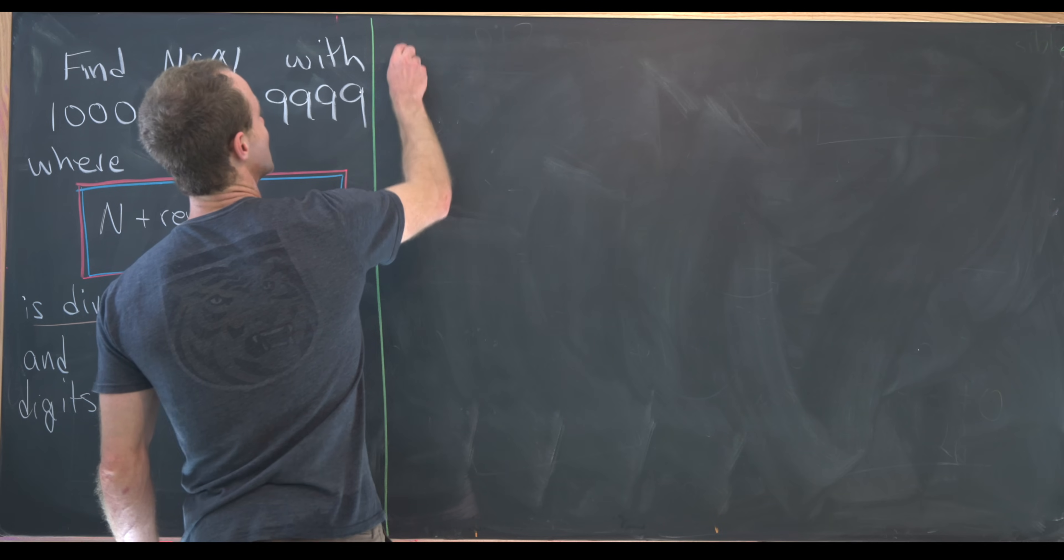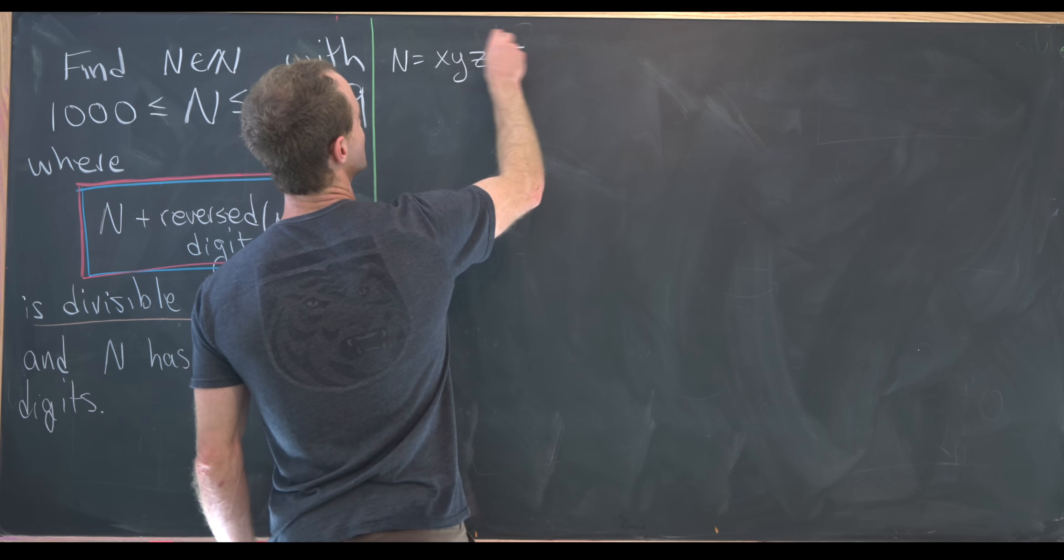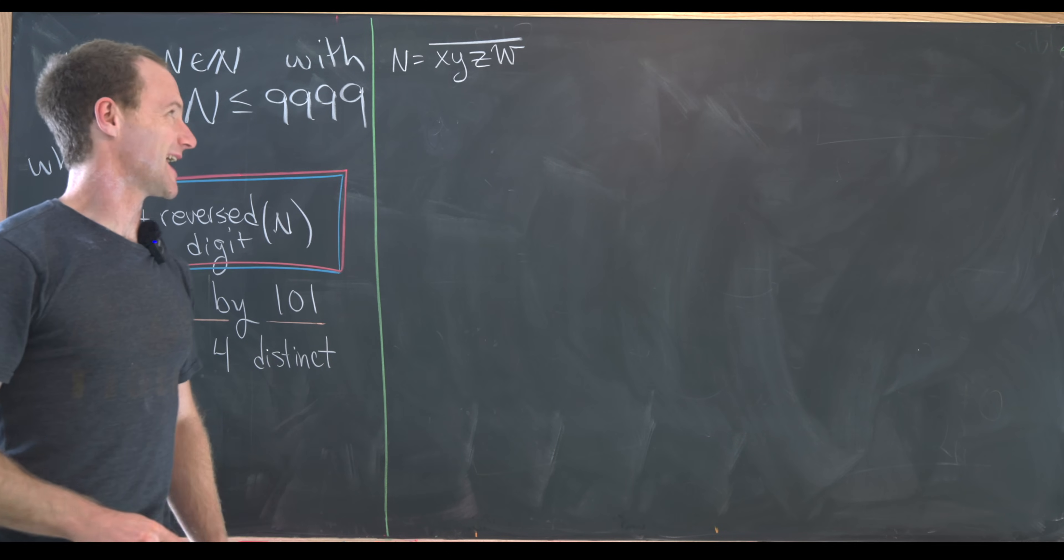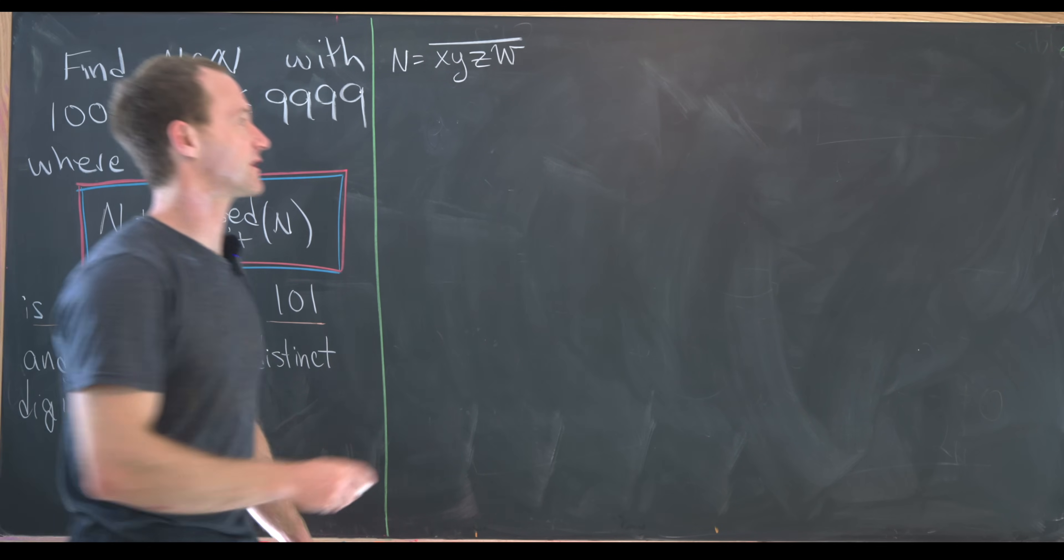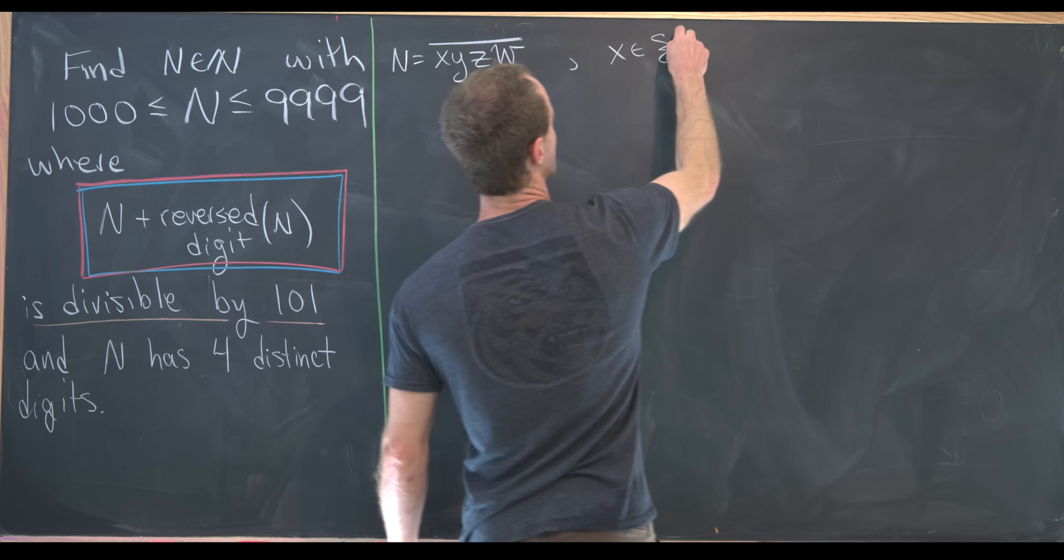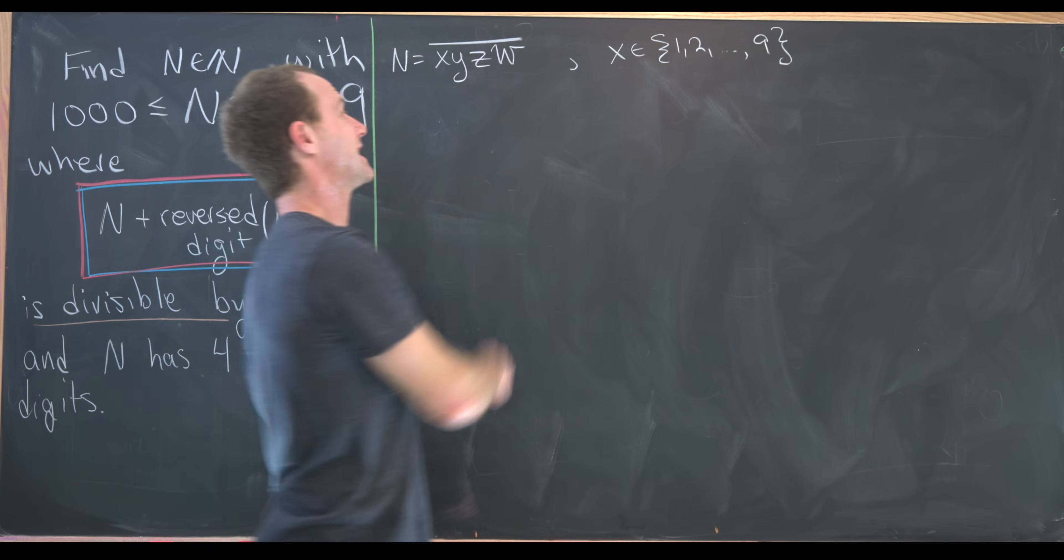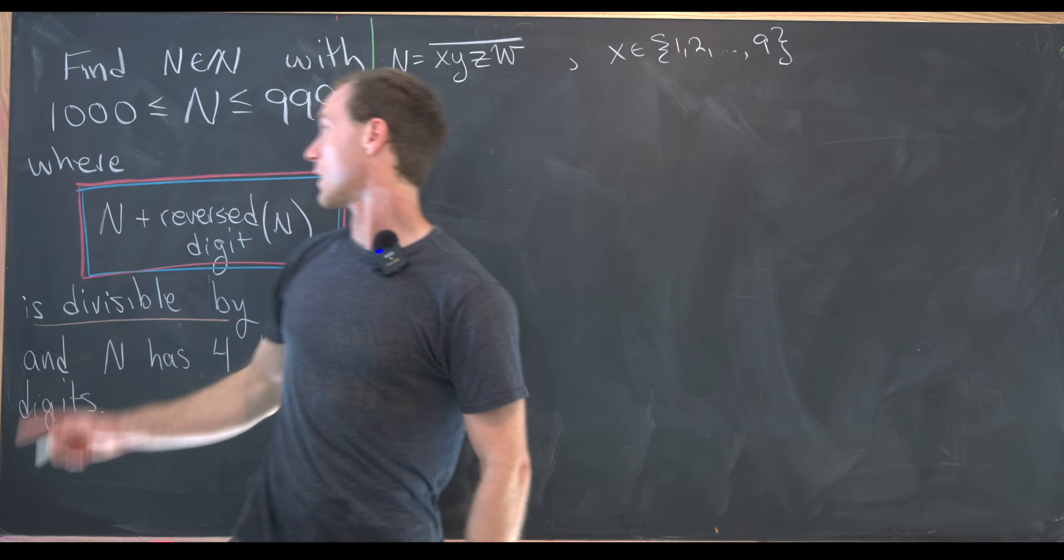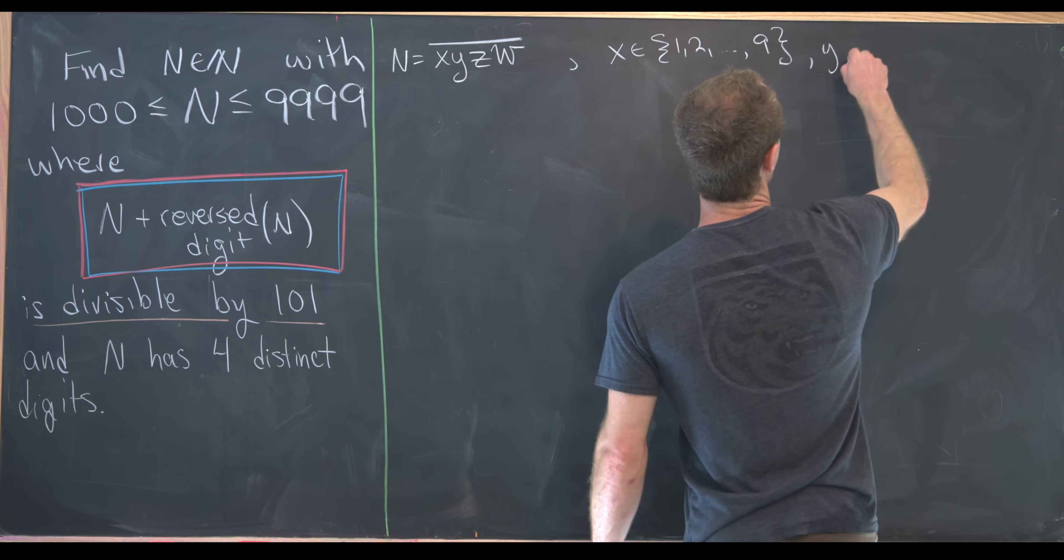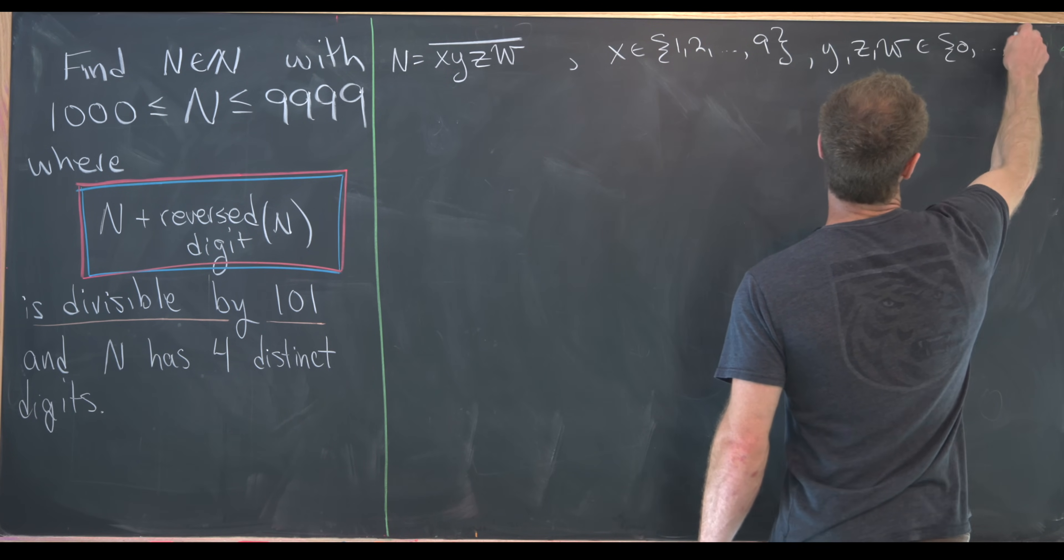Let's say that N is equal to X, Y, Z, W, and then I'll put a line over it. So that means the first digit is X, the second is Y, the third is Z, and the fourth is W. So that tells us that X comes from the set one, two, up to nine because it can't be zero. Otherwise, we would be outside of this range. But then Y, Z, and W come from the set zero to nine.